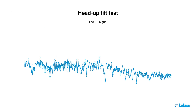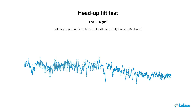Let's explore the Autonomic Nervous System's response during this test. In the supine position, the body is at rest and parasympathetic tone predominates. Consequently, heart rate is typically low and heart rate variability is elevated during supine rest.